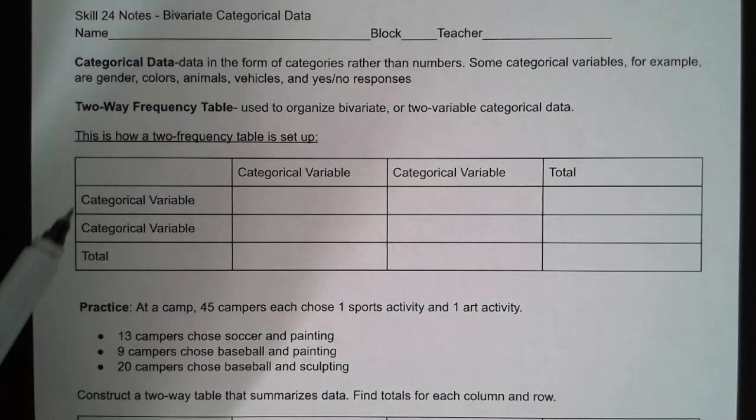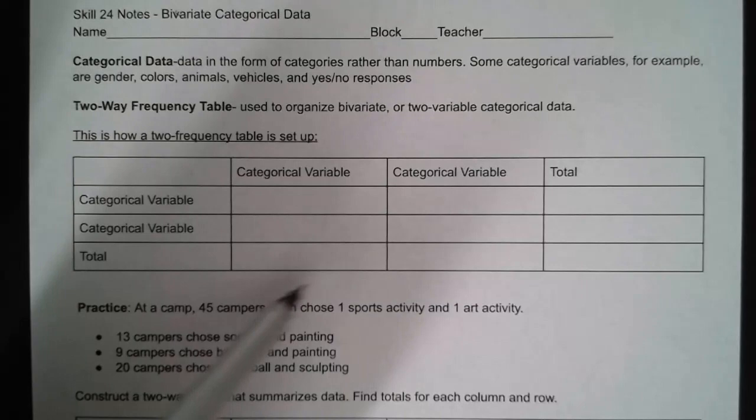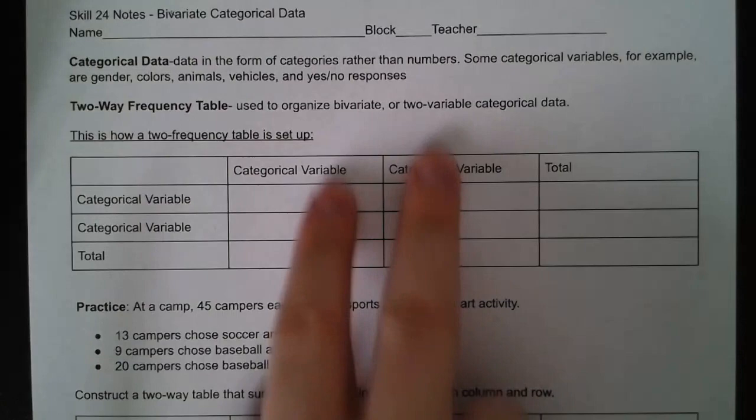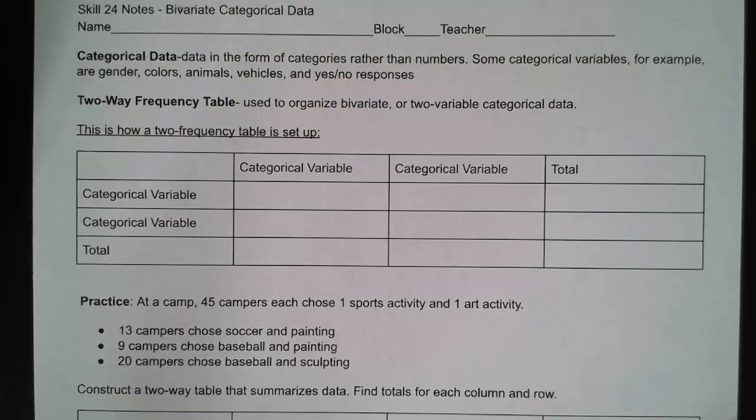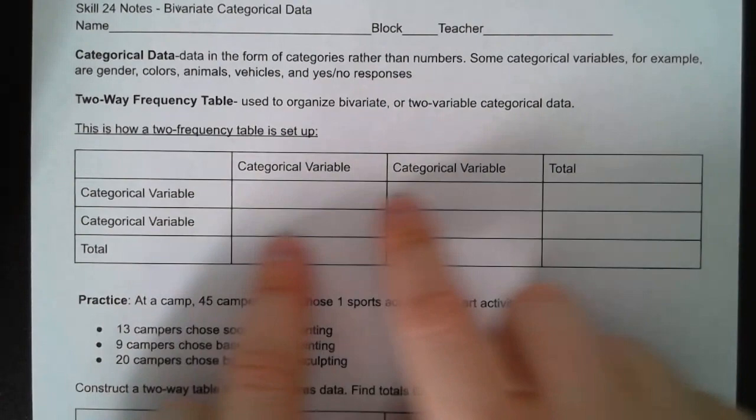To look at this, we'll be using a two-way frequency table. It is used to organize bivariate, or two-variable, categorical data. It's called a two-way table because we have categories this way and this way — bivariate responses because we have two-by-two categories going each direction.